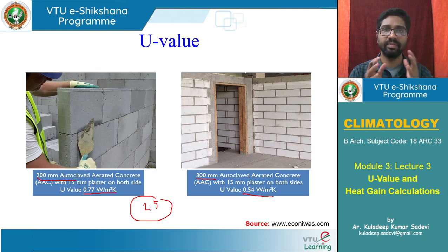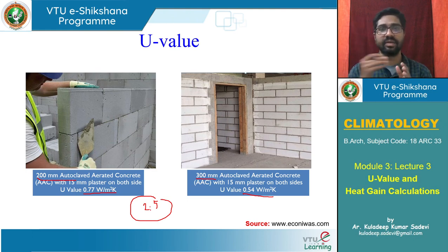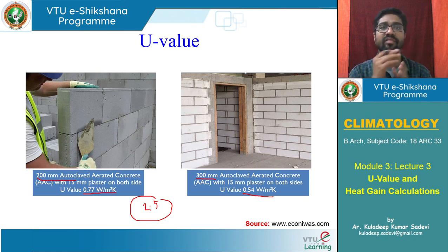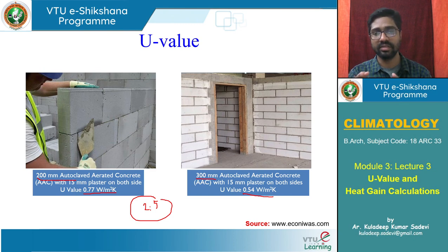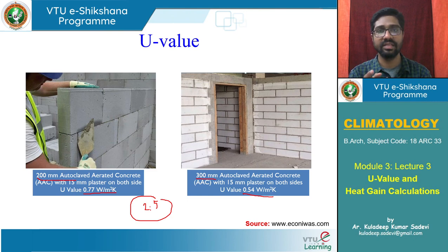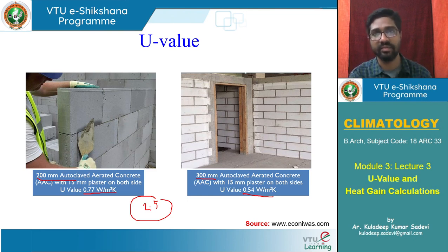A 9-inch brick wall for one square meter area, for one degree change in temperature, has a rate of heat flow of about 2.5 watts — that is 2.5 joules per second going through that wall from outside to inside. If outside temperature is 31°C and inside is 30°C, the rate of heat flow for a 9-inch brick wall is about 2.5 W.